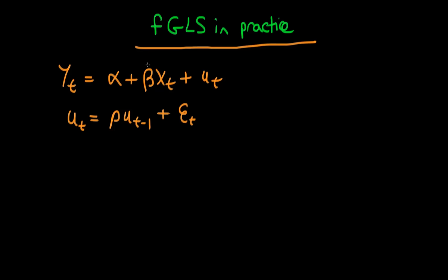In this video I want to talk about how we do FGLS in practice, and the F here stands for feasible again because of the fact that in this particular circumstance we don't actually know the explicit form of the serial correlation.